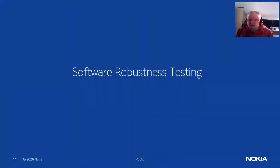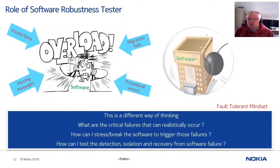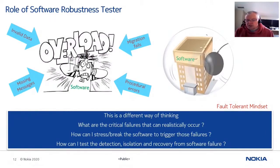The role of a software robustness tester is to test the software with invalid data, missing messages, migration failures, and procedural errors. Most of the time we think about how software behaves correctly, but the robustness tester needs to think about what can go wrong — what are the critical failures that can realistically occur. It's important to focus on realistic scenarios, not crazy ones that would never happen. The tester must know how to stress or break the software to trigger those failures and verify that the software detects, isolates, and recovers gracefully.